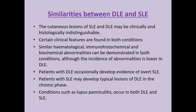There are certain clinical features found in both conditions — for example, Raynaud's phenomena and chilblains can occur in both conditions. Hematological, immunohistochemical, and biochemical abnormalities can be demonstrated in both conditions, although the incidence of abnormality is low in DLE. Patients with DLE occasionally develop evidence of overt SLE, and patients with SLE may develop typical lesions of DLE in the chronic phase. Conditions such as lupus paniculitis occur in both DLE and SLE.